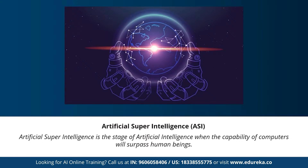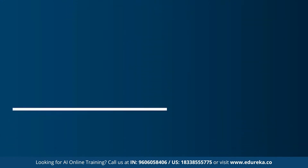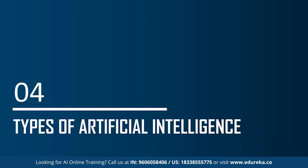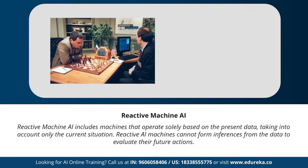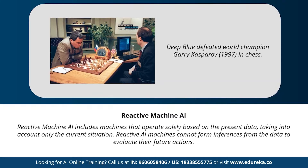Moving on to the different types of artificial intelligence — based on the functionality of AI-based systems, artificial intelligence can be categorized into four types. The first type is reactive machines AI. This type includes machines that operate solely based on present data and take into consideration only the current situation. Reactive AI machines cannot form inferences from data to evaluate future actions and can perform only a narrowed range of predefined tasks. An example is IBM's chess program that beat world champion Garry Kasparov.